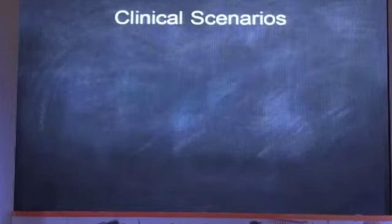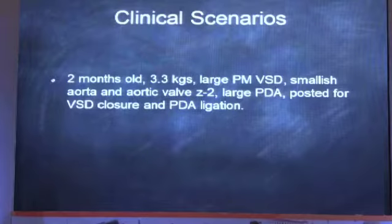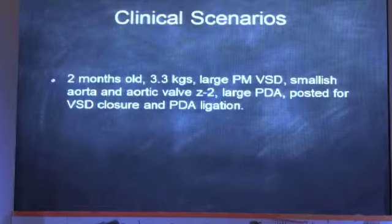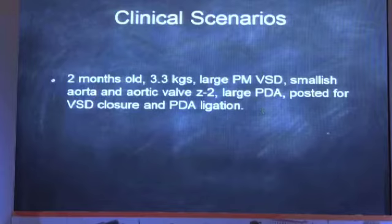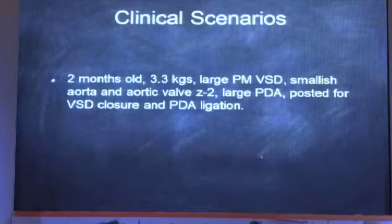Here are some clinical scenarios. A two-month-old, 3.3 kg child with a large perimembranous VSD, a smallish aorta (Z-score minus 2), and large PDA, posted for VSD closure and PDA ligation. Since the outflow tract is involved, the cardiac neural crest cells are involved. After PDA ligation, there may be a possibility that the arch is hypoplastic or there is coarctation. As an anesthesiologist, placing a radial artery line and taking radio-femoral pressure measurements can be very helpful.